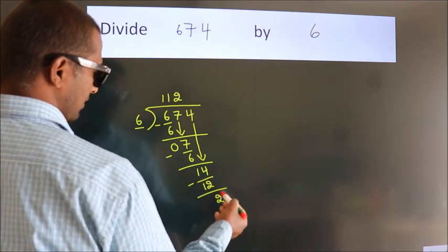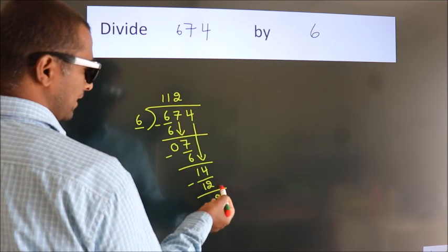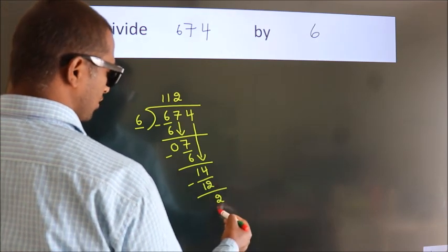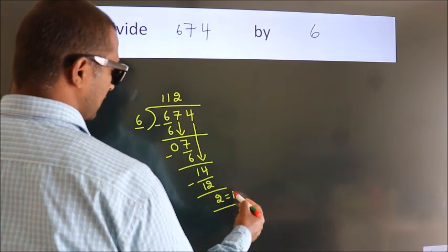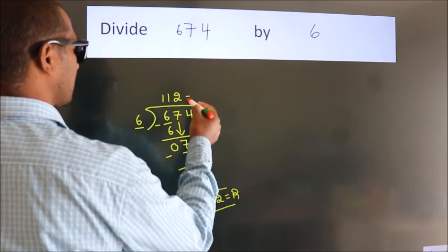After this, no more numbers to bring it down, so we stop here. This is our remainder. This is our quotient.